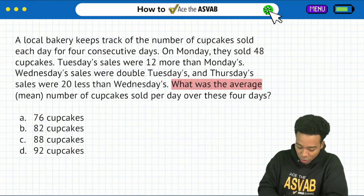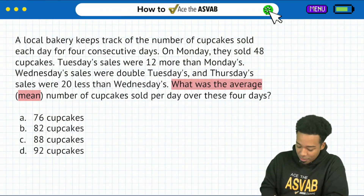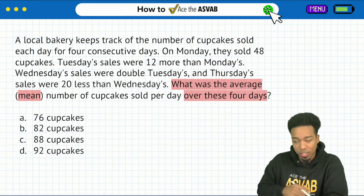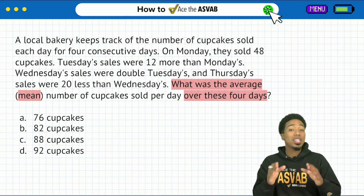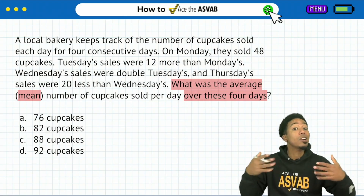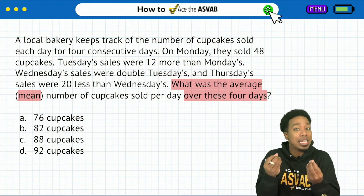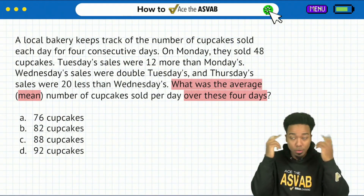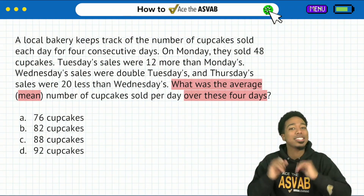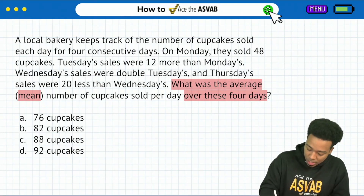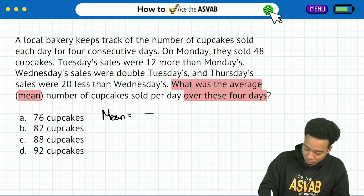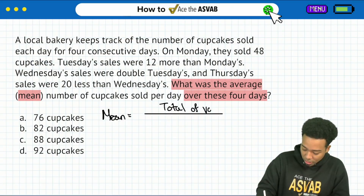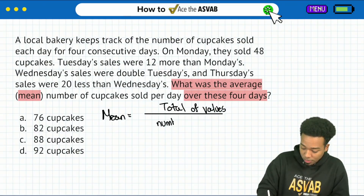What was the average — specifically they're saying mean — of those cupcakes sold per day over these four days. So the moment I see a very hyper-specific or formulaic word like average or mean, I've got to think about that formula. I've got to be able to recall that thing as soon as I see it. And so to get the mean, we are going to find the total of our values and then divide by the number of numbers.